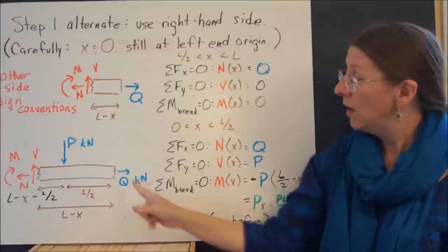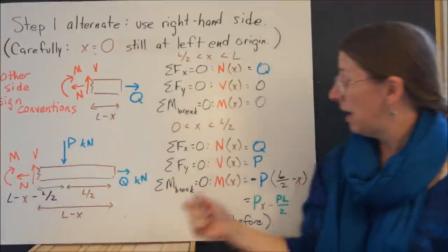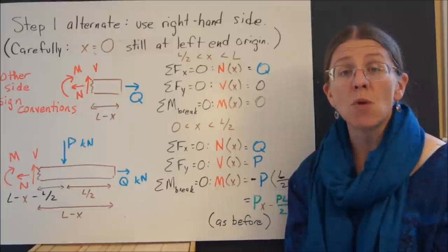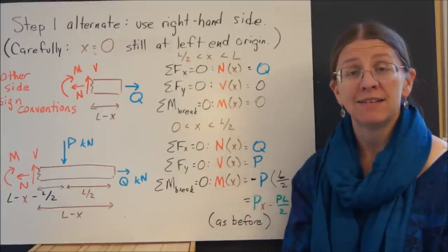Between zero and L over 2, now I have the mid-P again because I'm going this way. And I get the same values I had before. You can do this in a smart way and look at either side and use whatever is easiest.